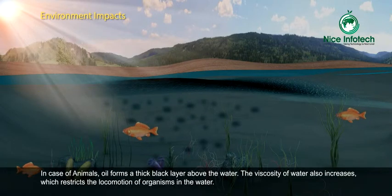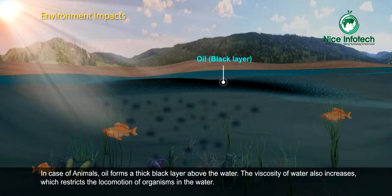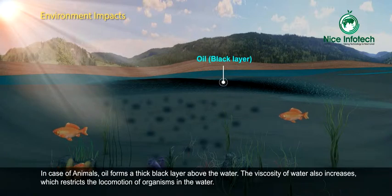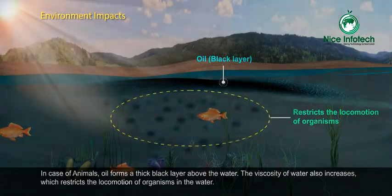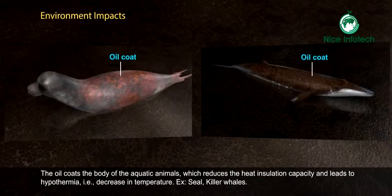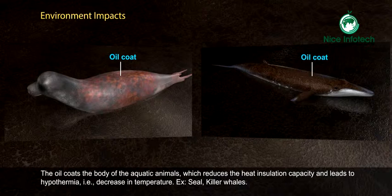In the case of animals, oil forms a thick black layer above the water. The viscosity of water also increases, which restricts the locomotion of organisms in the water. The oil coats the body of aquatic animals, which reduces the heat insulation capacity and leads to hypothermia, that is, a decrease in body temperature. Examples include seals and killer whales.